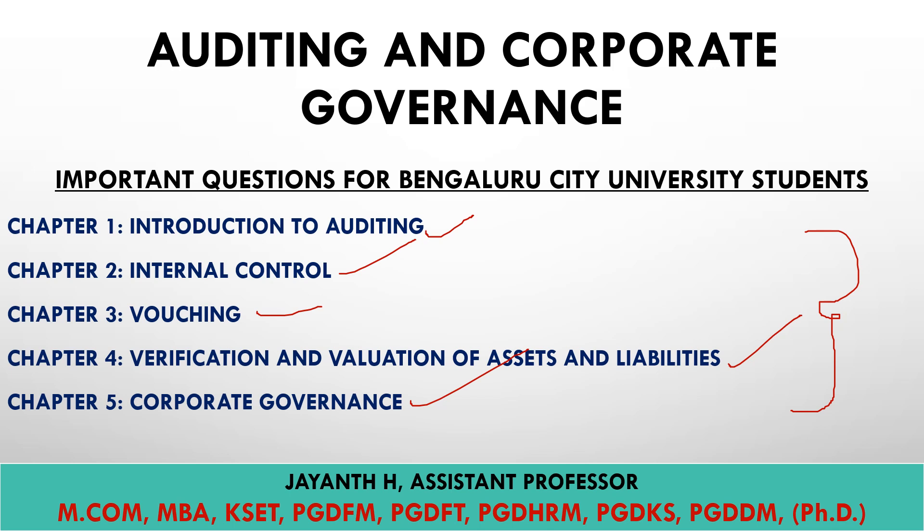Coming to the first chapter — introduction to auditing. The syllabus covers the definition of auditing, objectives, differences between accountancy and auditing, new audit commencement, audit notebook and its significance, duties and liabilities, and professional ethics. In very simple terms, auditing is a systematic examination of the books and records of a business or organization, to verify the financial operations or produce a reliable result or output.